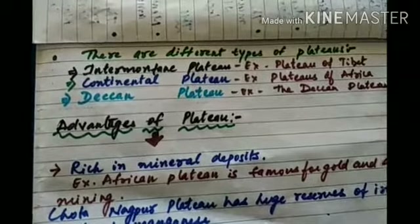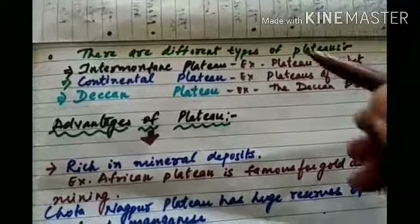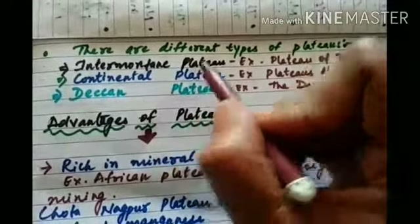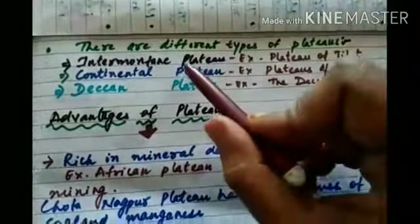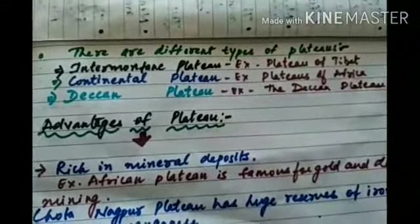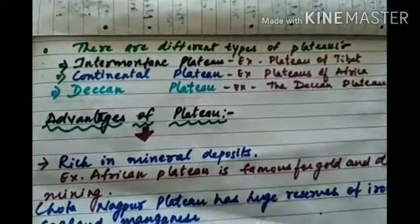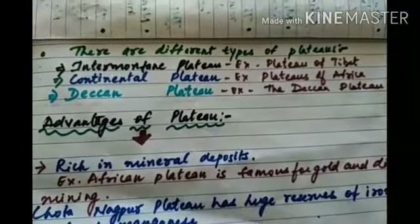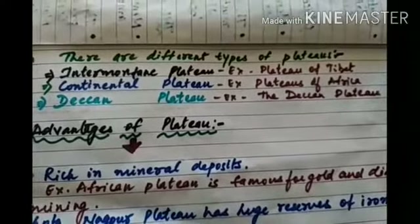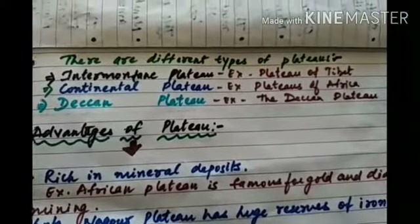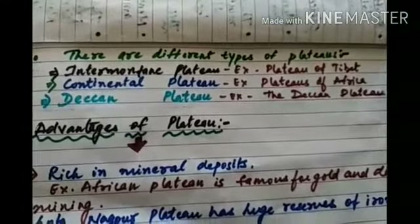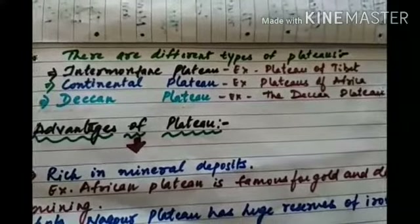We have different types of plateaus. First is the inter-mountain plateau. This plateau is generally surrounded completely or partially by mountains, and that is why it is known as an inter-mountain plateau. The example is the plateau of Tibet.